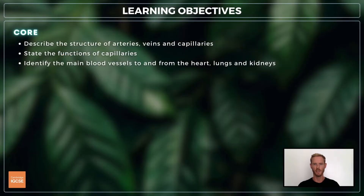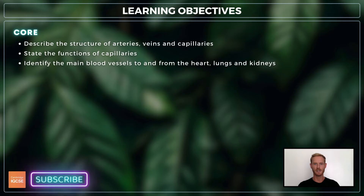For topic 9.3, you need to describe the structure of arteries, capillaries and veins, state the function of capillaries, and identify the main blood vessels of the heart, lungs and kidneys.